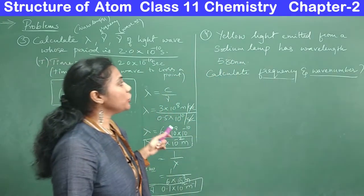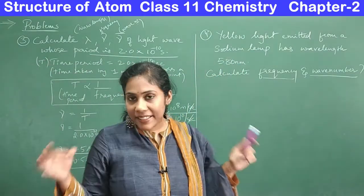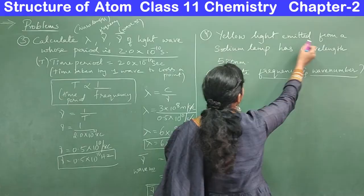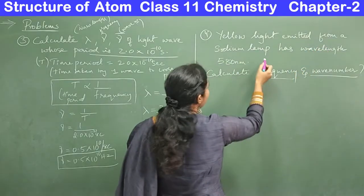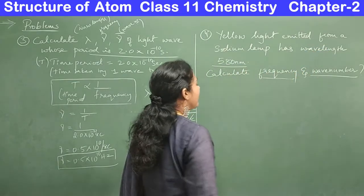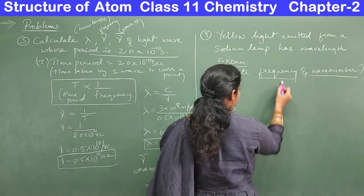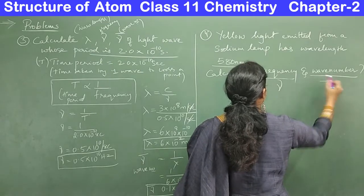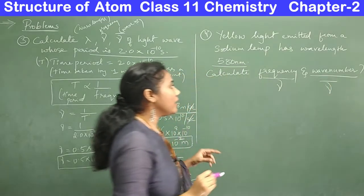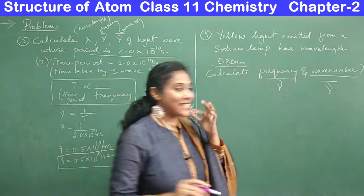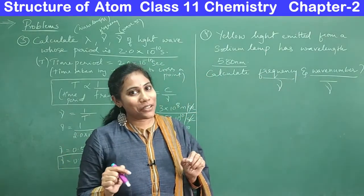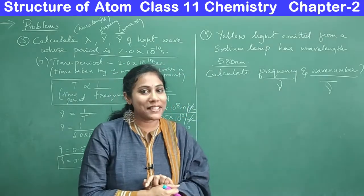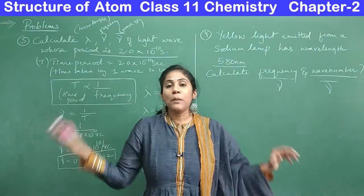The fourth question is homework for you. Yellow light emitted from a sodium lamp has a wavelength of 580 nm. Calculate the frequency ν and wave number ν̄ in standard units. Post your answer in the comment box — let's see who posts first!